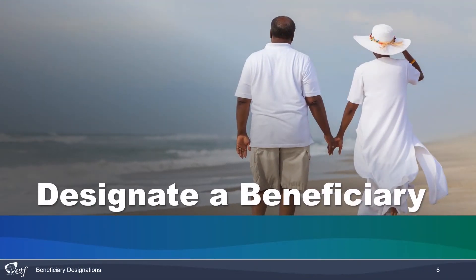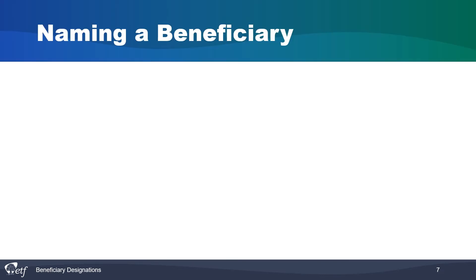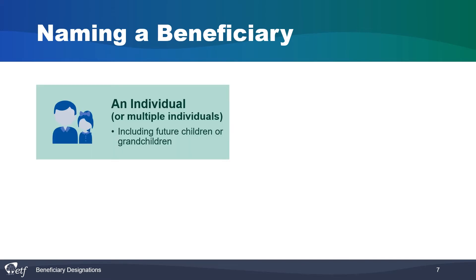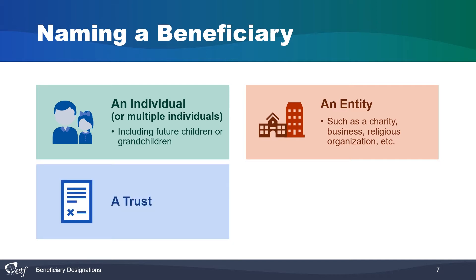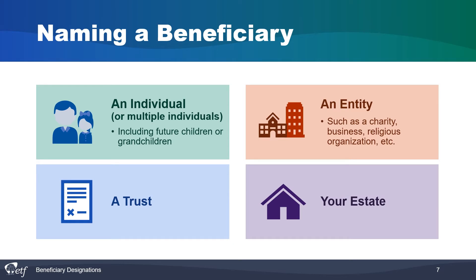Next, we are going to look at how to designate a beneficiary to receive your benefits. You may name one or multiple beneficiaries. A beneficiary does not have to be related to you. You may name an individual or multiple individuals, including future children or grandchildren. You may name an entity such as a charity, religious organization, etc. You may name a trust or your estate. You may not name the same individual, entity, trust, or estate more than once on the form.